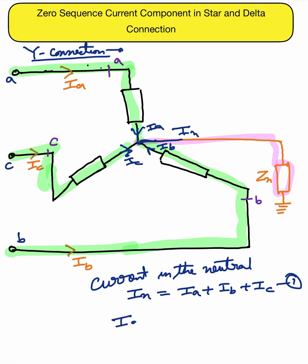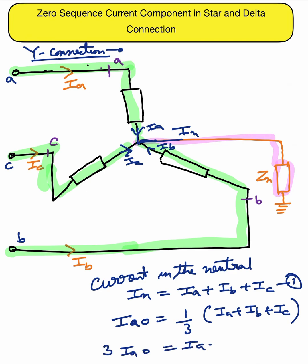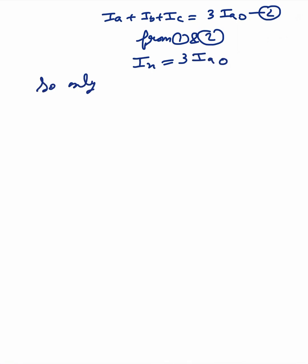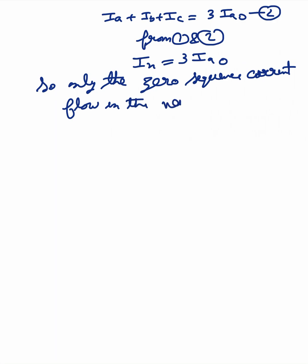The zero sequence current ia0 is equal to one-third times (Ia + Ib + Ic), so three times ia0 equals Ia + Ib + Ic. That is equation number two. From equations one and two, we get: In = 3·ia0. So only the zero sequence current flows in the neutral in the case of star connection.